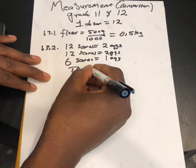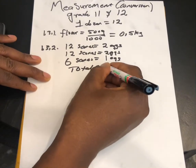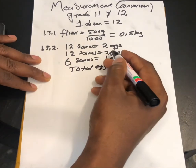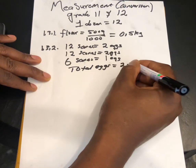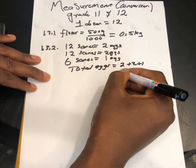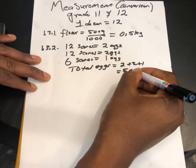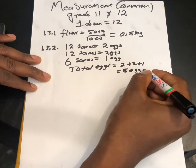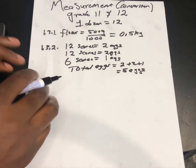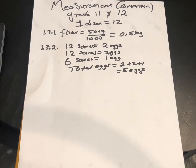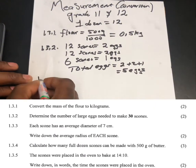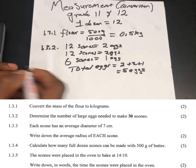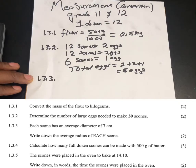The total eggs needed is 2 plus 2 plus 1, which equals 5 eggs. So 80 scones will need 5 eggs.